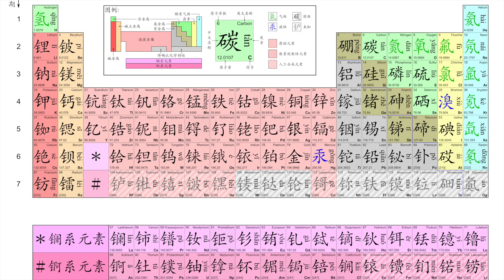The Chinese periodic table we see here looks rather similar to the one we might be familiar with. Although the arrangement appears very much the same, the symbols are different. This is because the Chinese don't use an alphabet — instead, they use characters in the place of words.